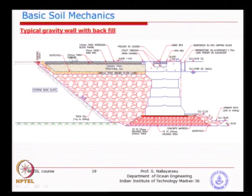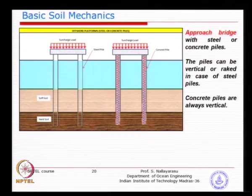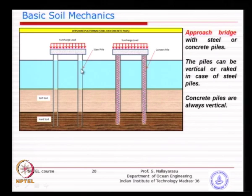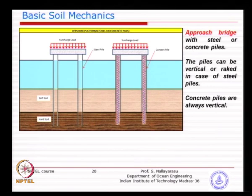For jetties built away from the coast with no access, you can use a steel pile driven into the ground and construct the deck, or construct a concrete pile and then the deck. The only difference is that every material has to be transported from the coastline to that location. In this type, there is no concrete involved initially - you take a circular hollow section, drive it, and achieve sufficient capacity from the pile depth embedded into the ground.